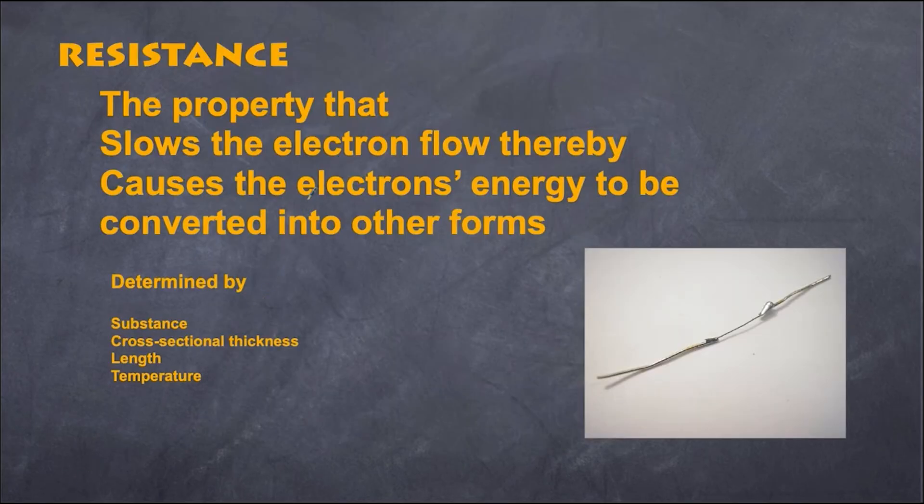In essence, when we talk about a substance's resistance, that's the ability to slow the flow down. Like our water analogy, that's like the thickness or diameter of the pipe. Like our slide analogy, it's the surface of the slide itself. It's actually determined by a number of factors—the ability to slow electron flow, the ability to cause electrons to lose their energy into other forms, is determined by four things.